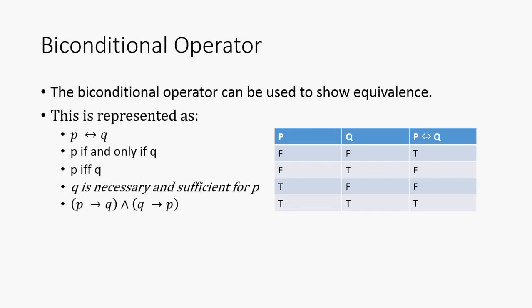Alright, so now we have the biconditional operator. And, it can be used to show equivalence. And, this is represented as a double arrow operator. So, two-sided arrow. So, P if and only if Q is how you can read this. And, we can abbreviate if and only if as IFF. Just for shorthand. Or, we can also represent this as Q is necessary and sufficient for P. And, it's also the combination of P implies Q and Q implies P.